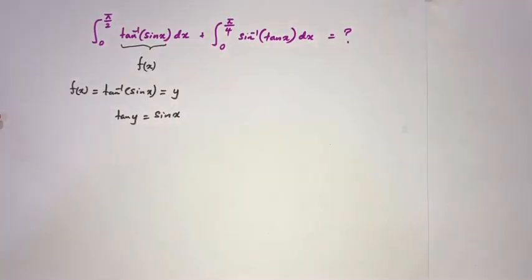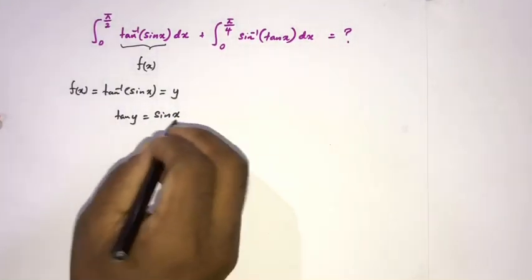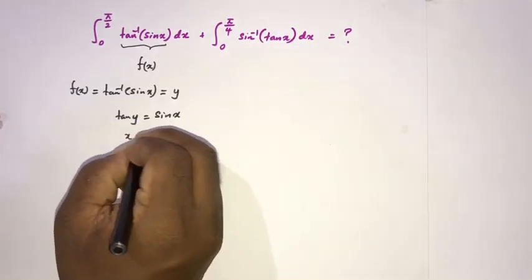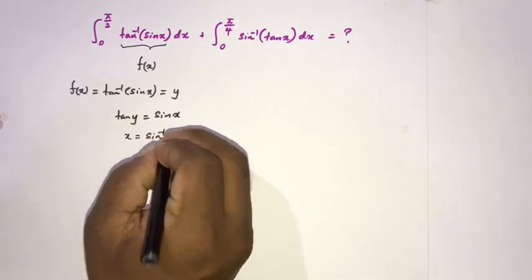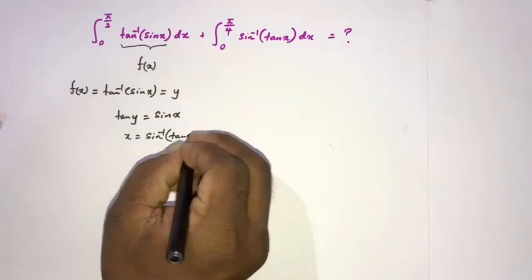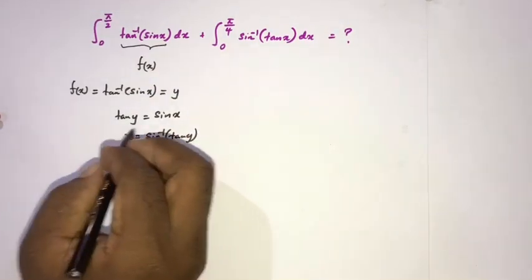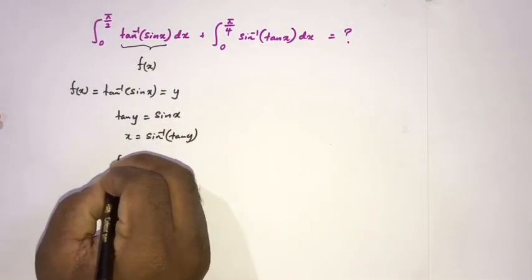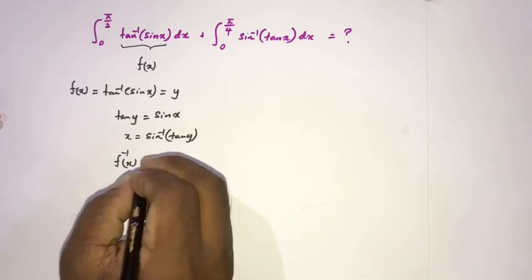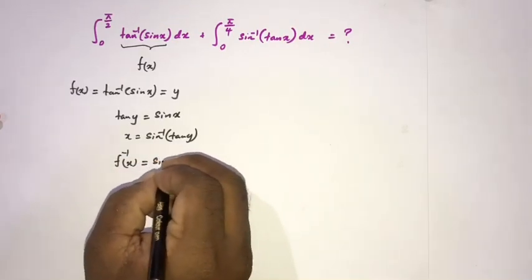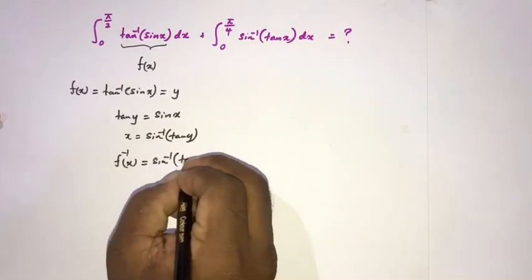Now we can write here tan(y) is equal to sine of x. Then if we isolate the x, we know x is equal to inverse sine of tan(y). Now we know here f(x), so inverse of f(x) is equal to inverse sine of tan of y.